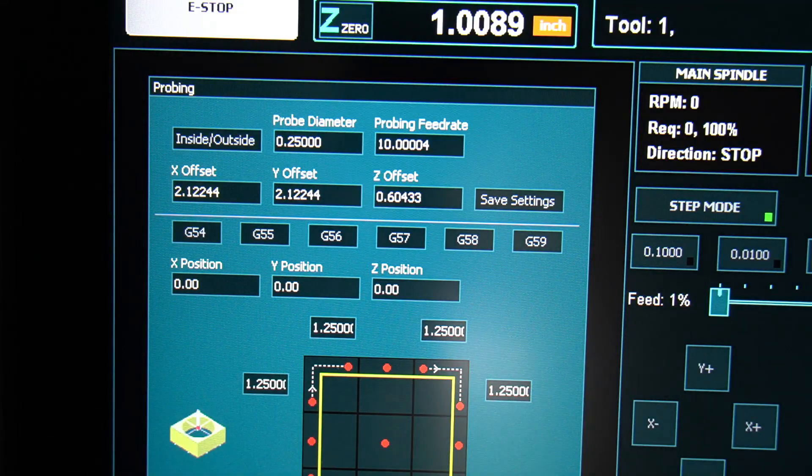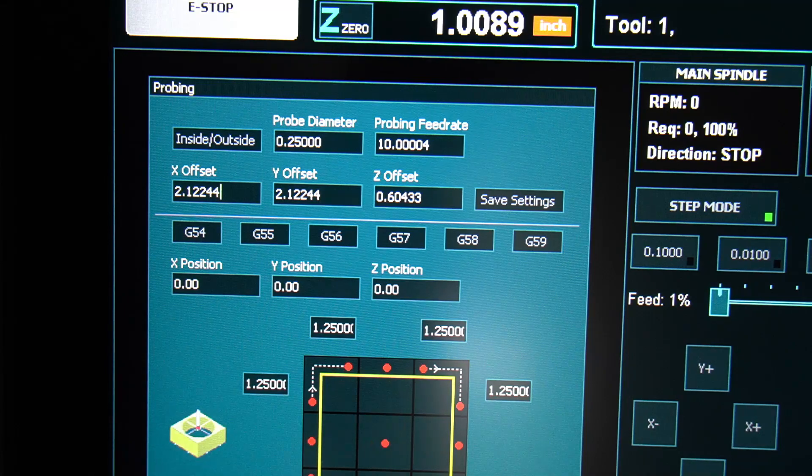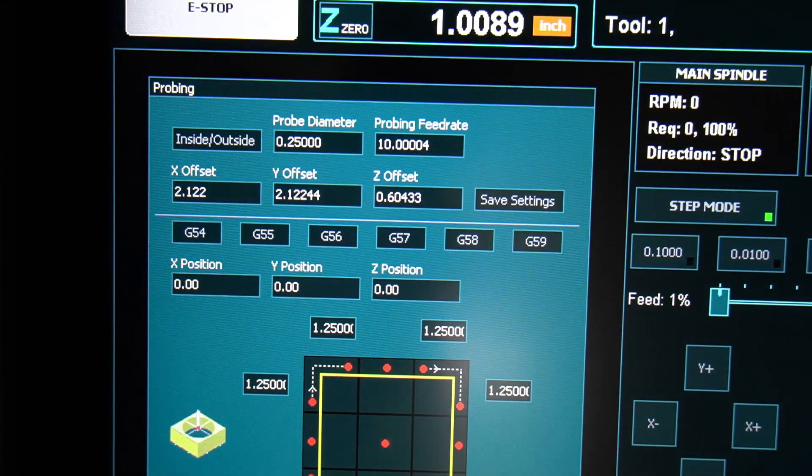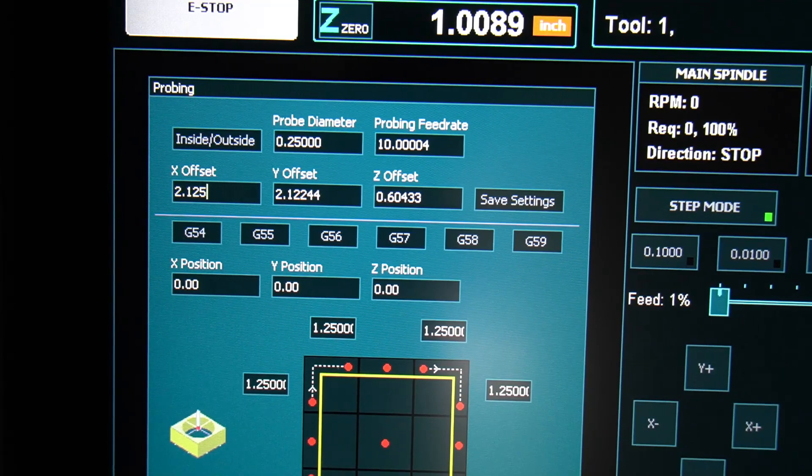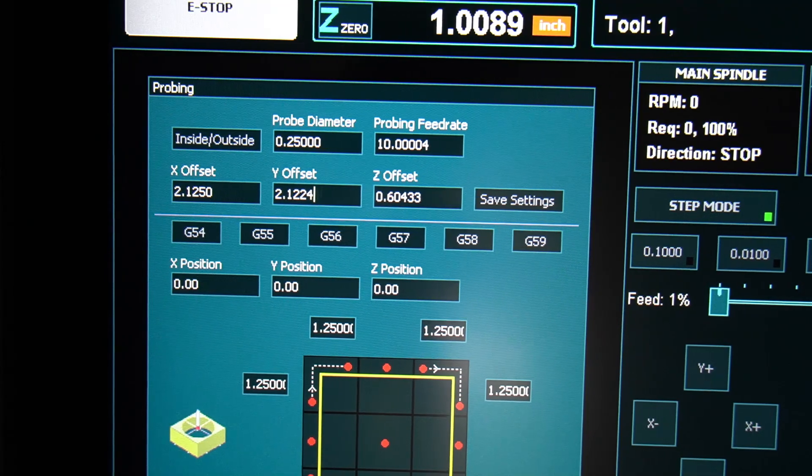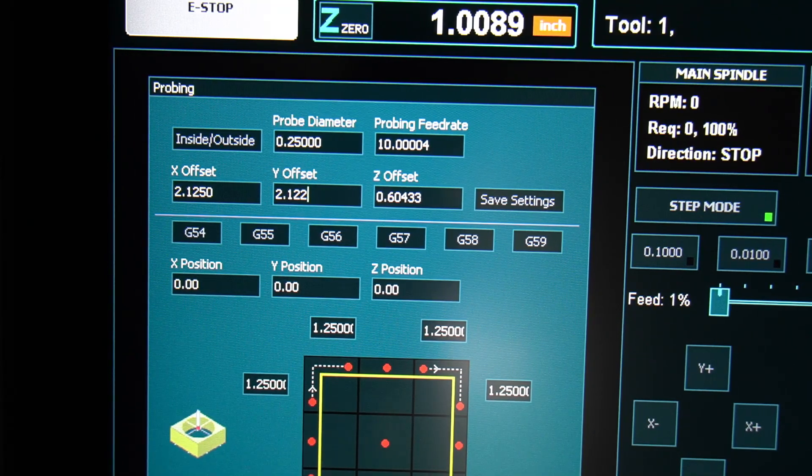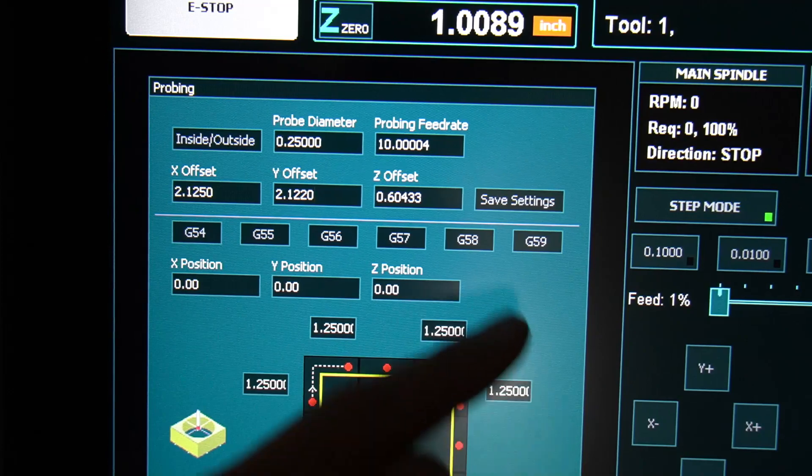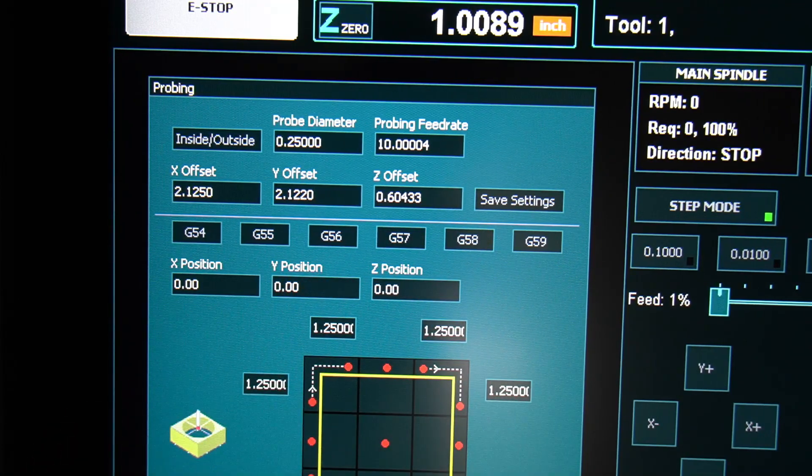Now with those measurements collected, we can enter them into the probing offsets. X is 2.1250, Y is 2.1220, and our Z is 0.6055 inches. Now remember, these will be slightly different based on the tolerance of your probe.